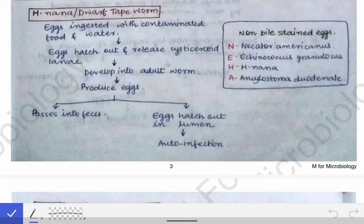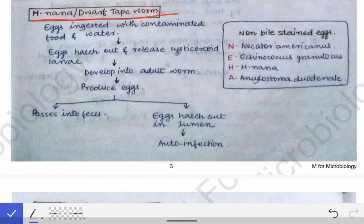Now coming to the other organism which is Hymenolepis nana, or the dwarf tapeworm. In the case of Hymenolepis nana, there is no intermediate host — there is only a definitive host, which is man. The most important tapeworms asked in exams are Taenia solium and Taenia saginata; the others, including Hymenolepis nana, are less frequently examined.